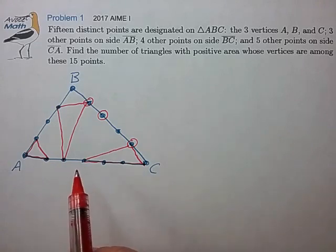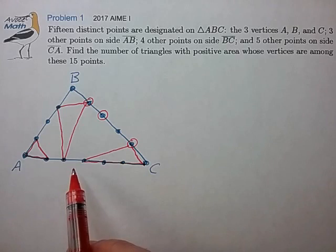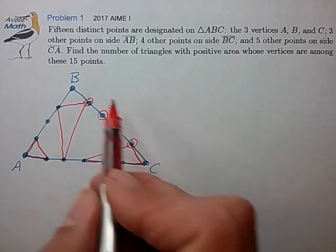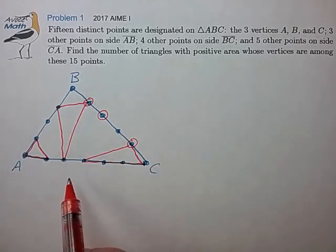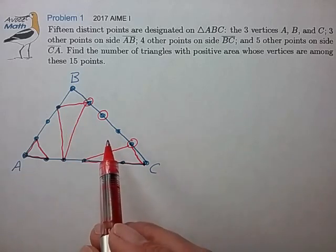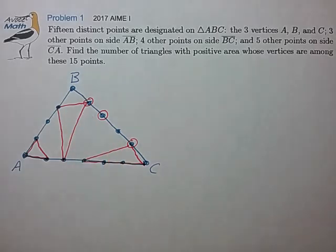So that suggests some type of complementary counting method where we count all possible selections of three points and then subtract away the selections of three points that form invalid triangles. So, let's see how that works.